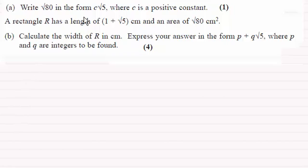Okay, welcome back then. For this first one we've got to write the root of 80 in the form c root 5, where c is a positive constant. So for part A, all we need to do is just break the square root of 80 into a product of its factors, preferably looking for values which are square numbers.